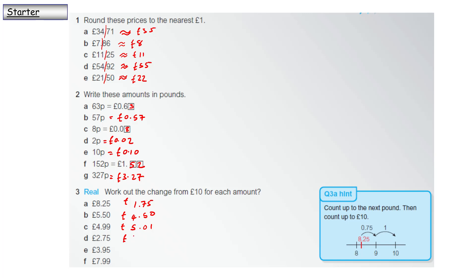Similarly with the rest, you should have £7.25. You could also use the column method. Just to give you another one: £10 take away £3.95.